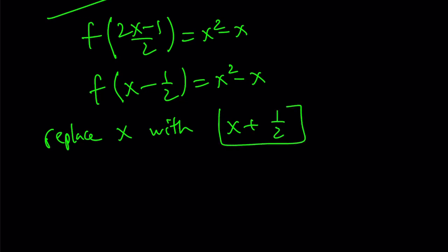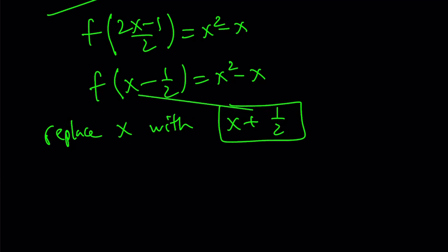Why? Because if I do, then I'm going to get f of x, because 1 half and negative 1 half are opposite. So we can go ahead and use this here. We're going to get f of x plus 1 half minus 1 half. This is going to give us f of x.